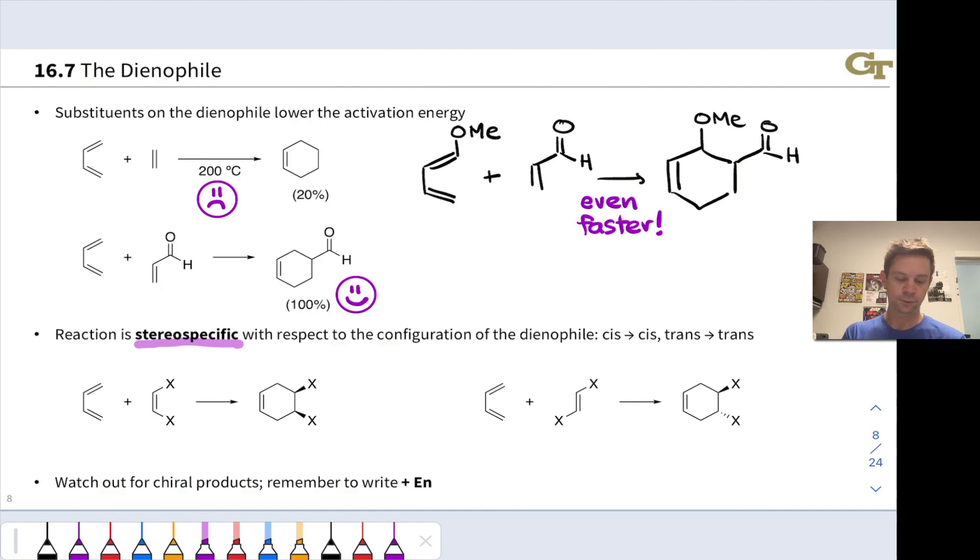So, if we start cis, for example, that's the situation here. We're starting in a cis alkene configuration. That cis configuration is maintained in the cyclohexene product. The X substituents here remain cis.